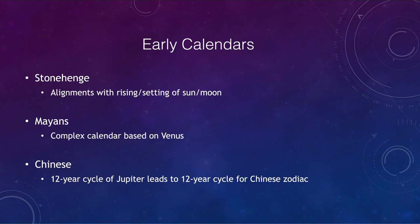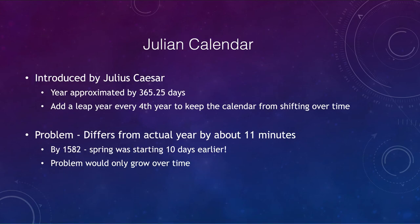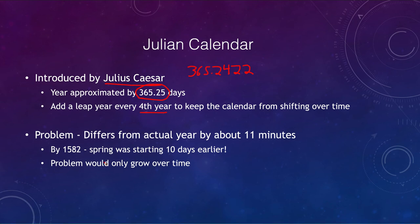One of the earlier calendars was the Julian calendar, introduced by Julius Caesar. It approximated the year as 365 and a quarter days — close to the actual value of 365.2422. Adding a leap year every fourth year kept the calendar from shifting, because without it you'd lose a quarter of a day each year, and every four years that adds up to a full day. Within a lifetime, you would notice the calendar shifting.